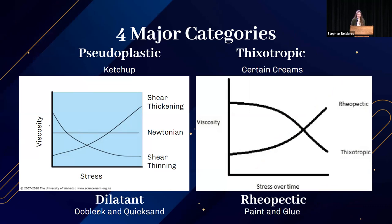Shear stress is created when two layers slip past each other. A viscous fluid is one that requires pressure to continue flowing. In pseudoplastic fluids, increasing shear stress decreases viscosity — these are called shear thinning fluids, and examples include ketchup and nail polish. For dilatant fluids, increased stress increases viscosity, meaning flow rate decreases with more force. Dilatant fluids are called shear thickening fluids, and examples include oobleck and quicksand.